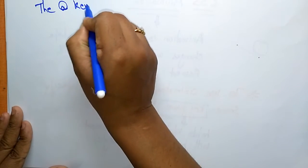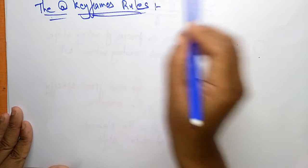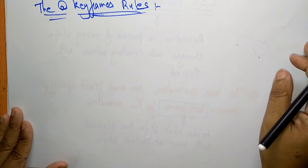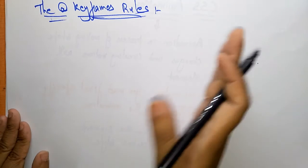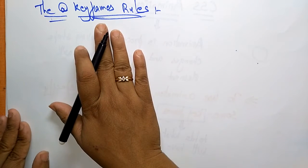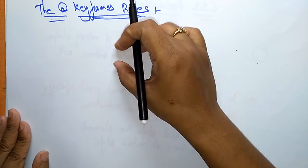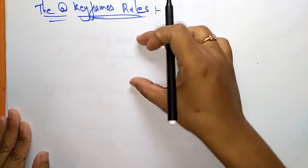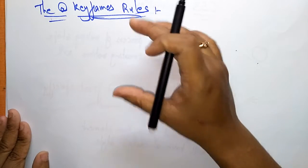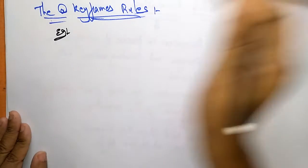Now let's see the rules of keyframes — the at-keyframes rule. When you specify the CSS styles inside the keyframes, the animation changes the current style to the new style. Whenever you are specifying CSS styles inside keyframes, inside the keyframe structure you are just mentioning the cascading style sheets. So whenever you specify those styles inside the keyframe, the current style is going to be changed to a new style. Let's see one example, then you will understand what exactly keyframes hold.